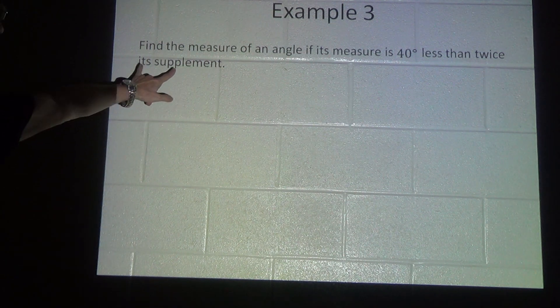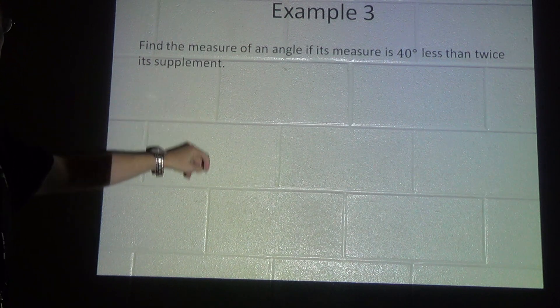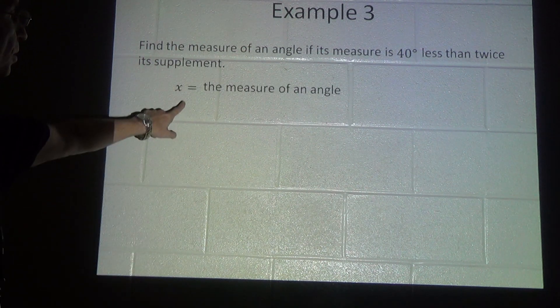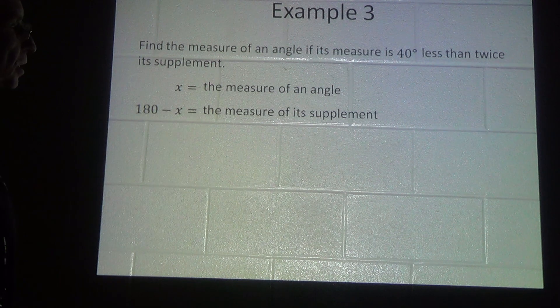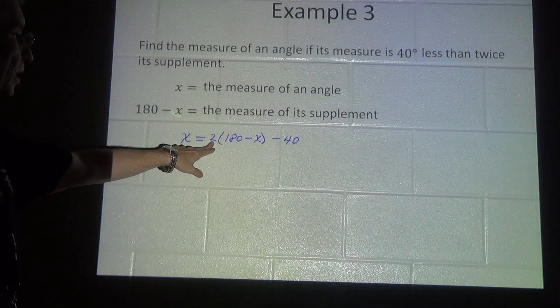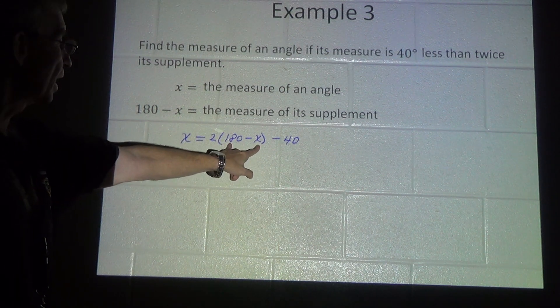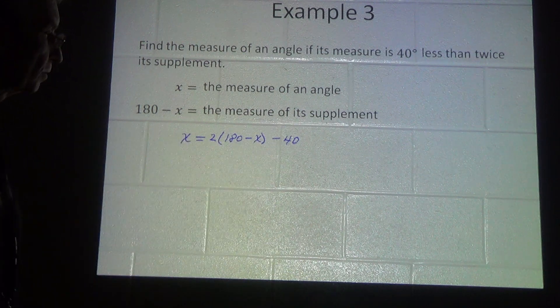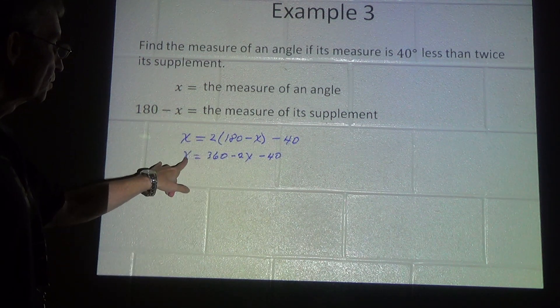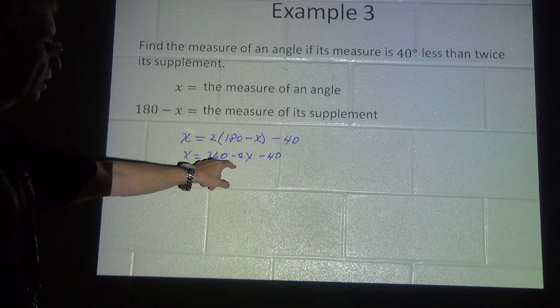Example 3: Find the measure of an angle if its measure is 40 degrees less than twice its supplement. Supplement means the angle added to it will add up to 180 degrees. So x is the measure of the angle we're looking for, and 180 minus x is the measure of the supplement. We set up: x equals 2 times (180 minus x) minus 40. Distributing gives us x equals 360 minus 2x minus 40.